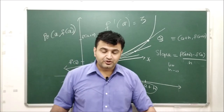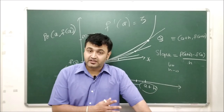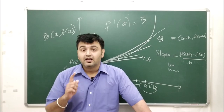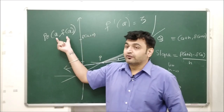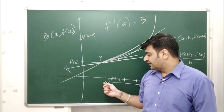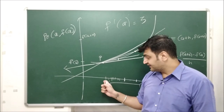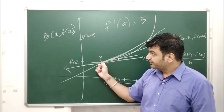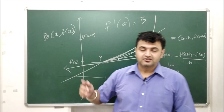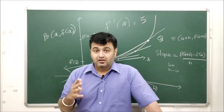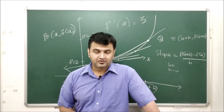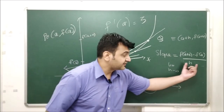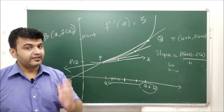The final upshot: geometrically, the derivative f'(a) is a number, and that number represents the slope of the tangent line at the point (a, f(a)). Don't just say it is the slope at point a — be precise: it is the slope of the tangent line passing through the point (a, f(a)).